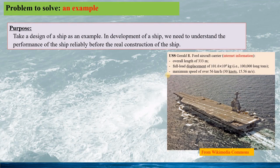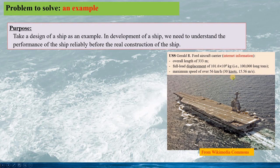Here is the USS Gerald R. Ford aircraft carrier. The aircraft carrier has an overall length of 333 meters, and a full load of 110,000 long tons, that is, 101.6 million kilograms. The maximum speed is about 30 knots, that is, 15.56 kilometers per hour, or 15.56 meters per second.